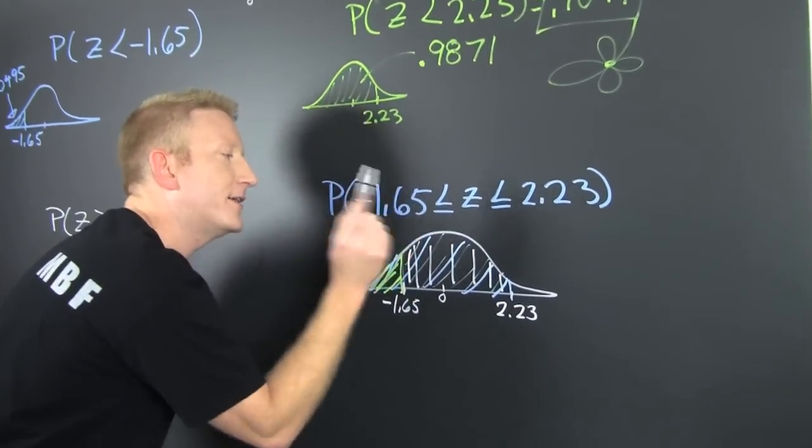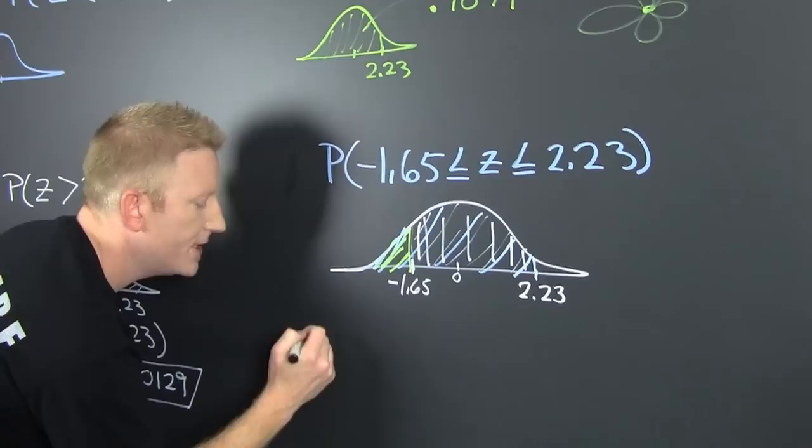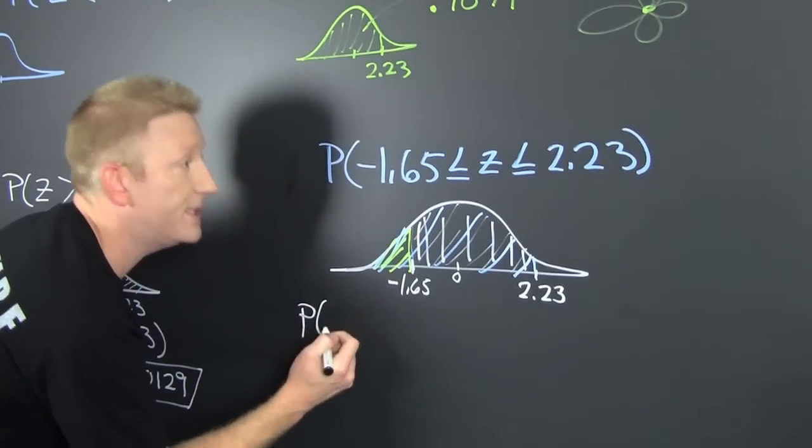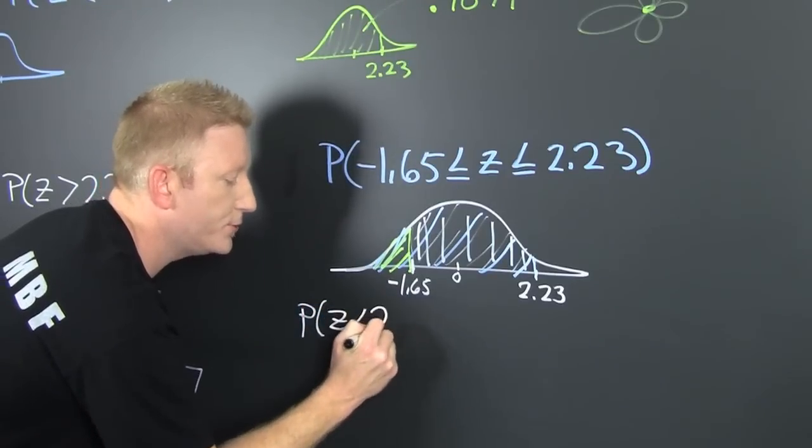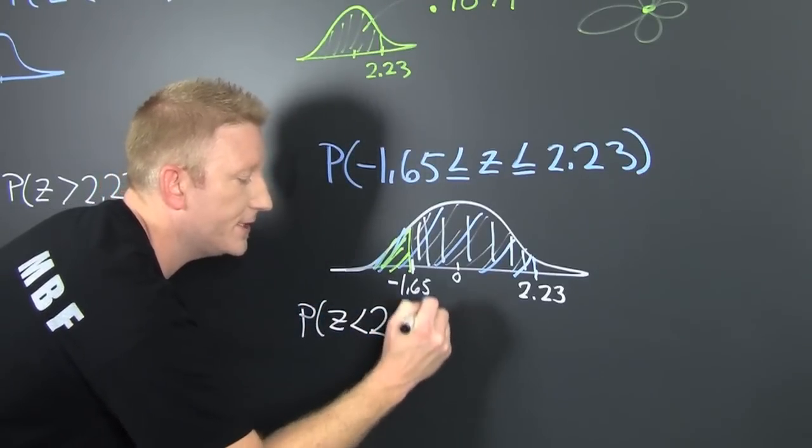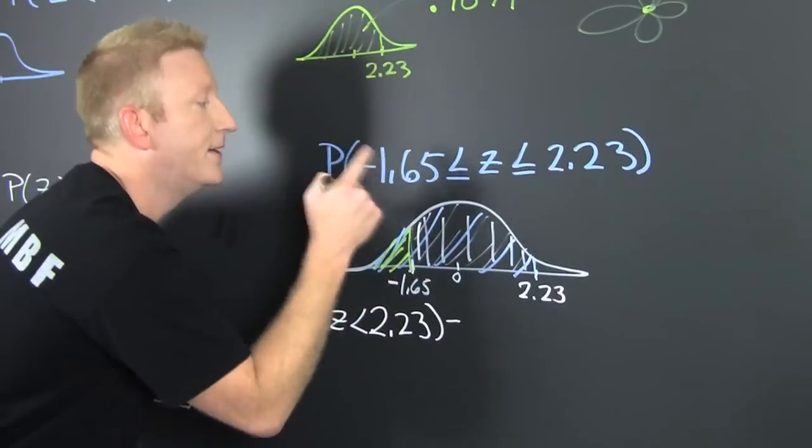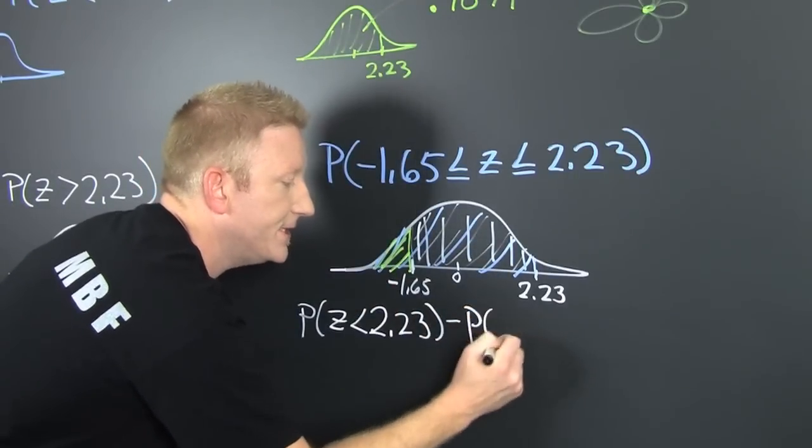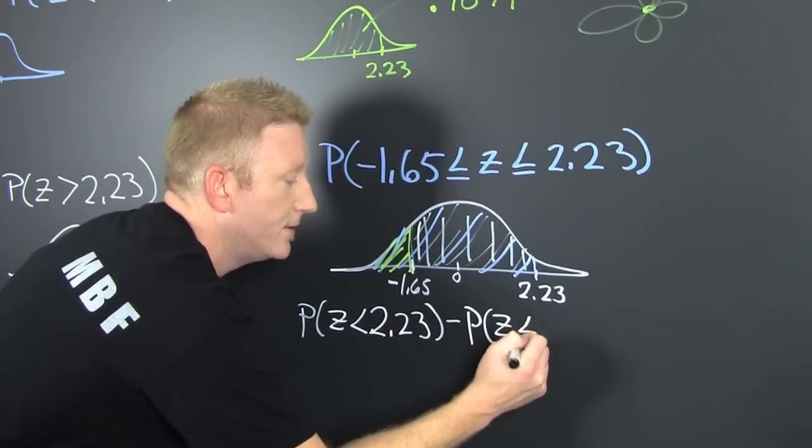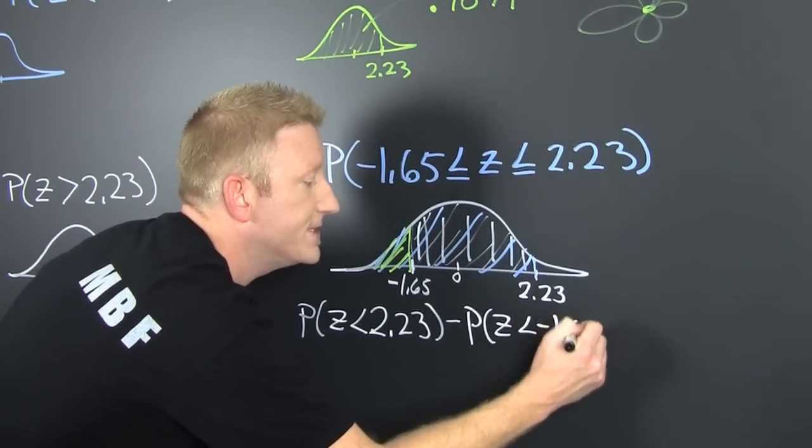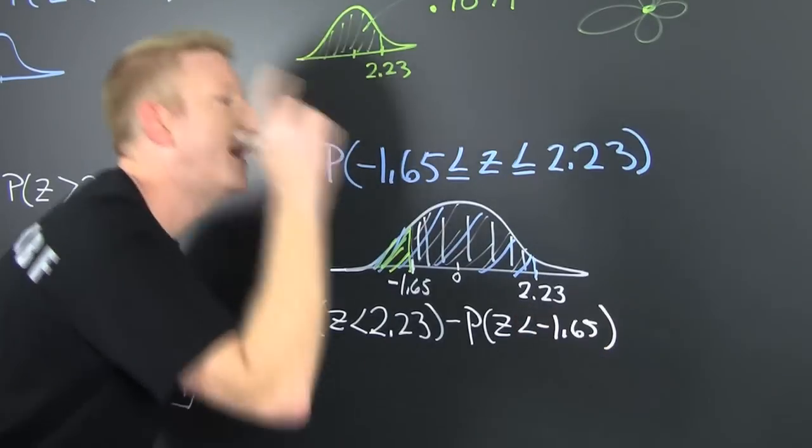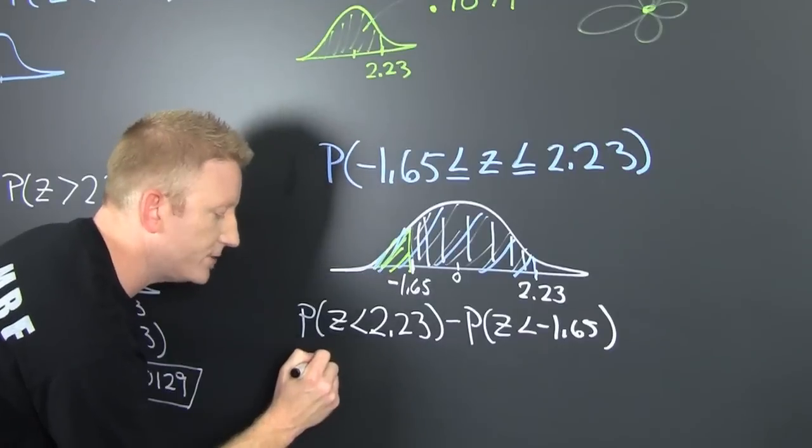This is going to be the probability that z is smaller than 2.23 minus the probability that z is less than or equal to minus 1.65. And we have both of those values.